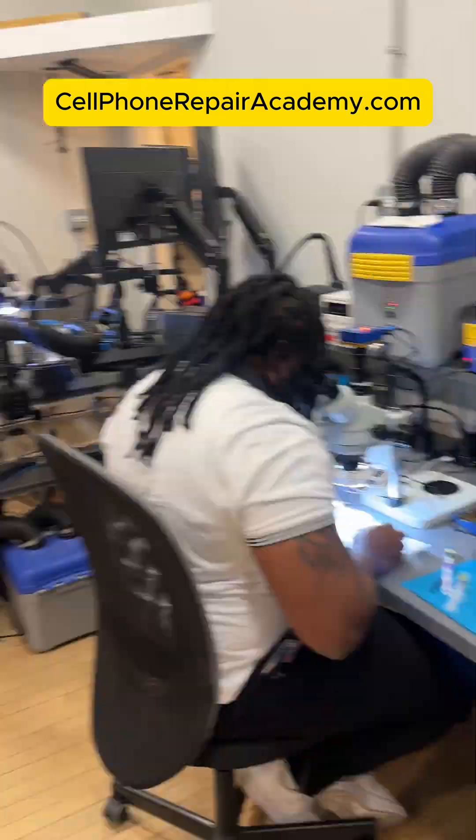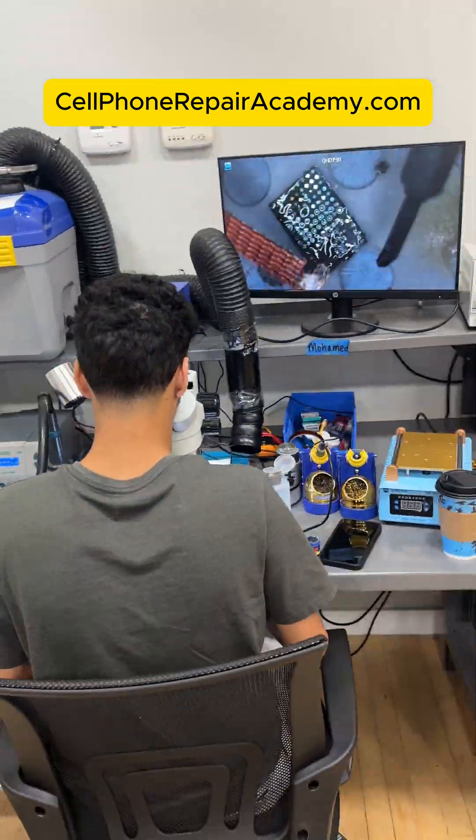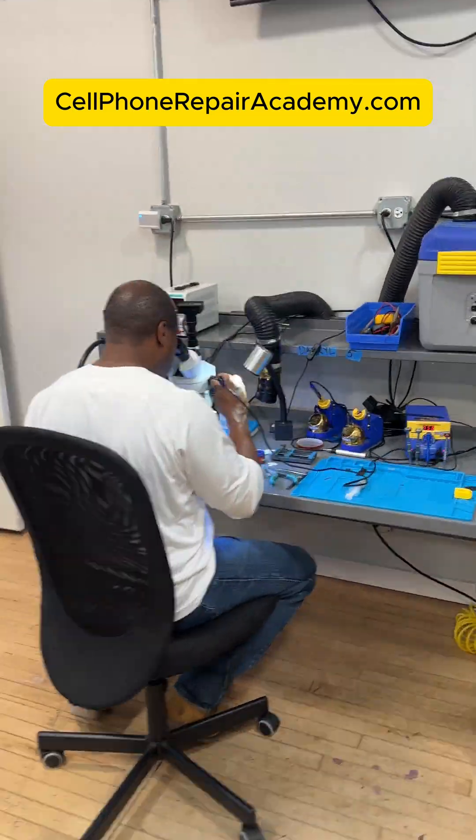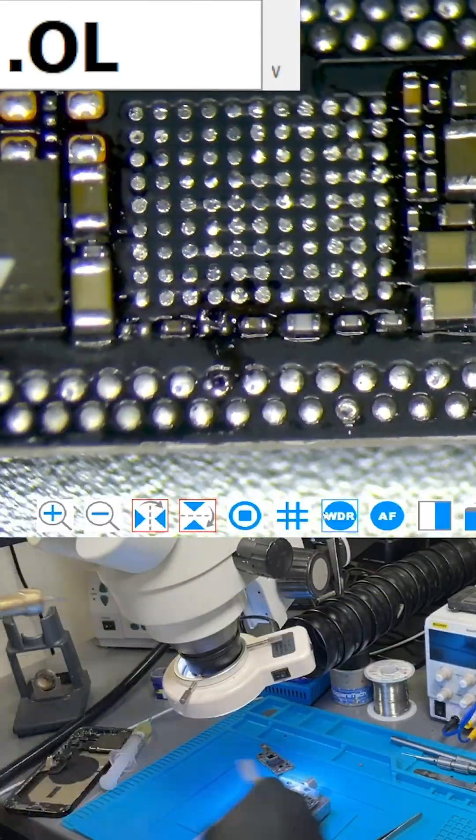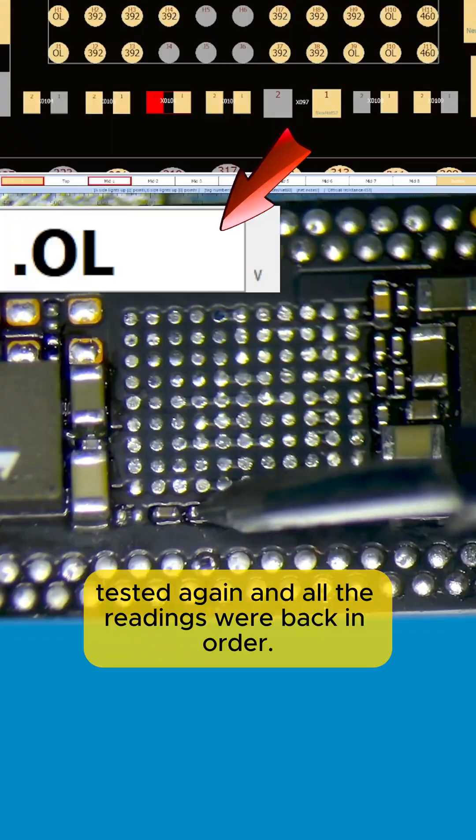Want to learn how to perform this type of repair? Visit CellPhoneRepairAcademy.com for more information. We replaced the resistor, tested again, and all the readings were back in order.